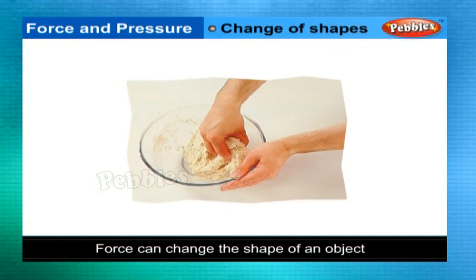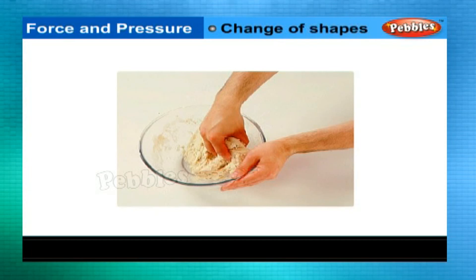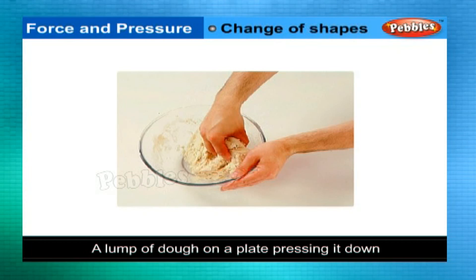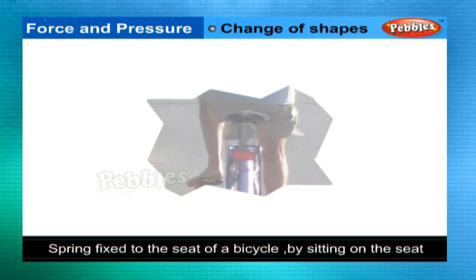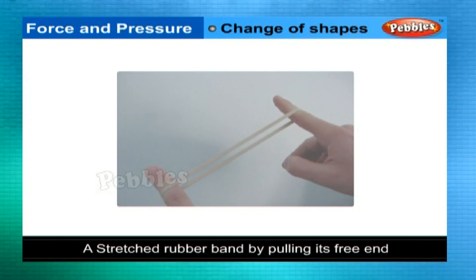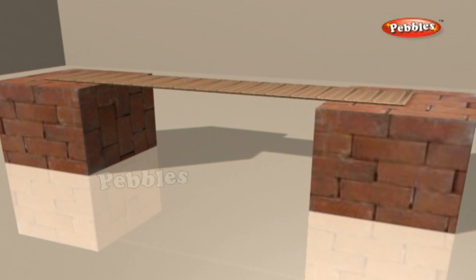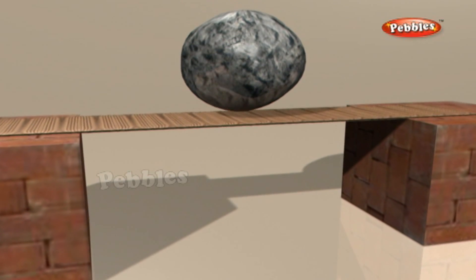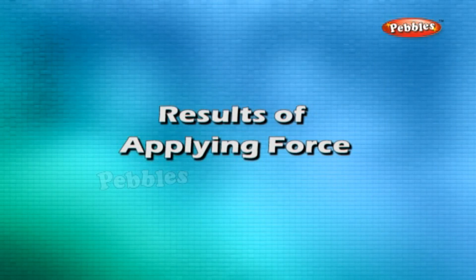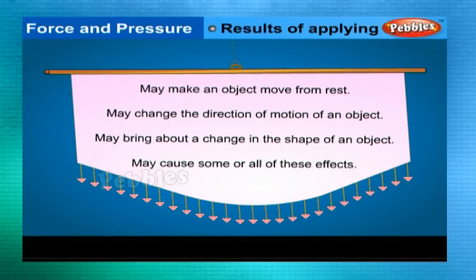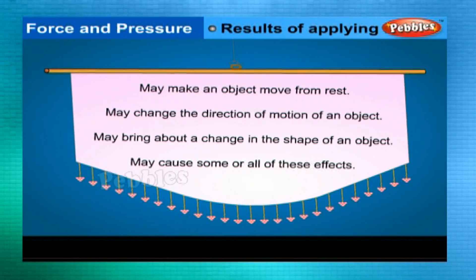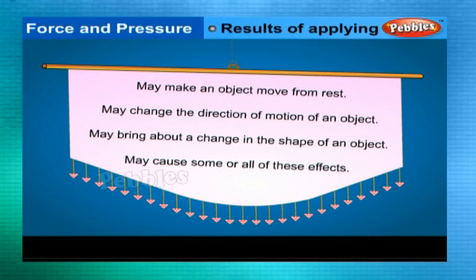A force can also change the shape of an object. For example: pressing a lump of dough on a plate, compressing a spring fixed to the seat of a bicycle by sitting on it, pulling the free end of a stretched rubber band, or placing a plastic or metal scale between two bricks with a weight at the center. The results of applying force may include: making an object move from rest, changing the direction of motion, changing the shape of an object, or causing some or all of these effects.